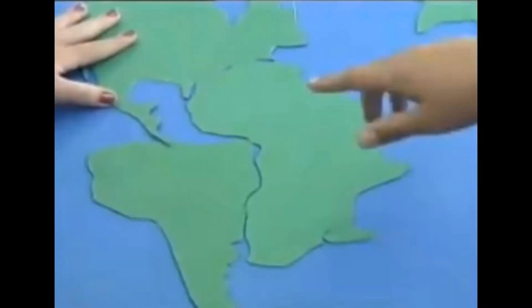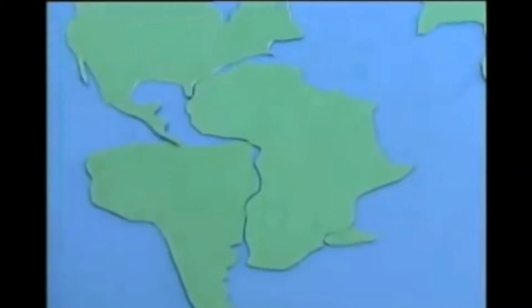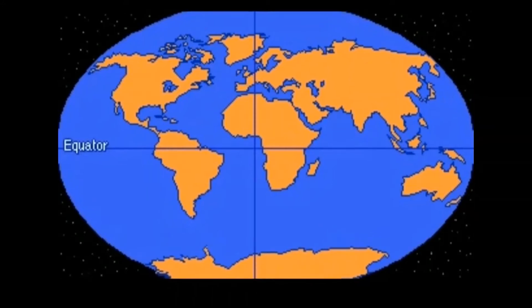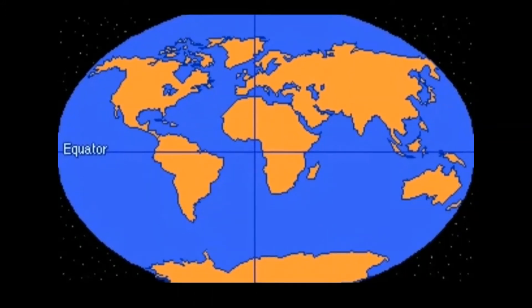The same goes for the island of Madagascar — it fits right into the coast of Africa. The North American coastline fits perfectly around portions of Africa. If you were to try and put the pieces of the Earth back together, it will look a little something like this.